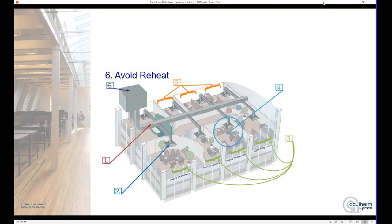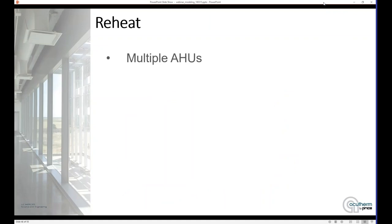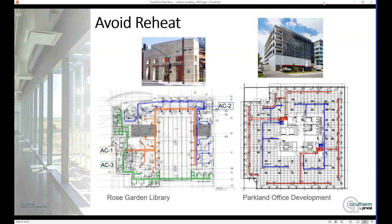Lastly, we're going to talk about reheat. Reheat, by definition, is a waste of energy because we're taking energy that we've already cooled and now we're heating it back up again. So if there's any way to avoid or minimize its use, we want to try it. One good way is in your designs — if you can work with a multiple air handling unit system to create your zoning, then you won't need any reheat. For example, here's a little library on the left with three different air handlers — in this case rooftop units — separating the perimeters of the building from the interior and avoiding reheat.